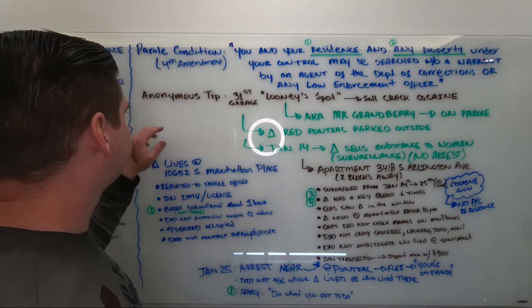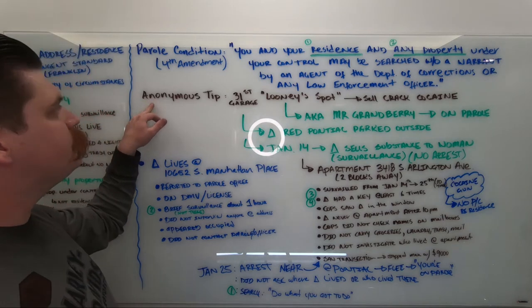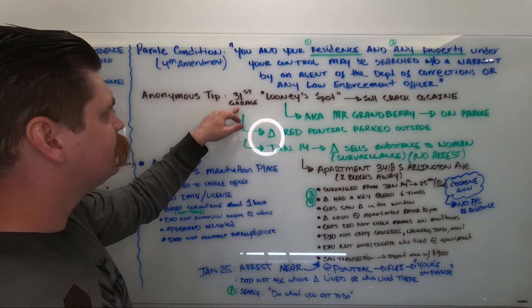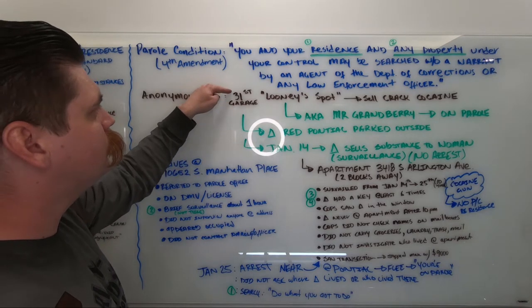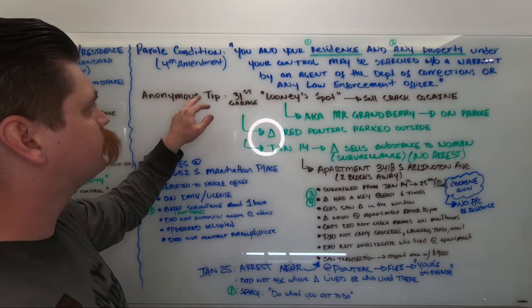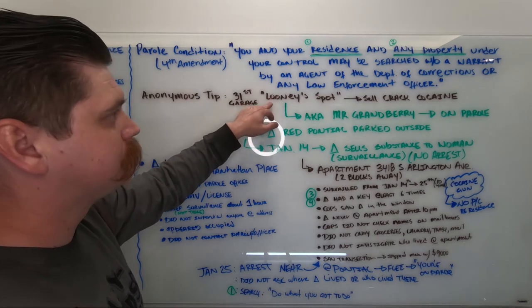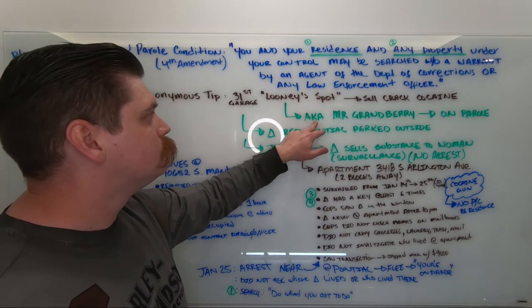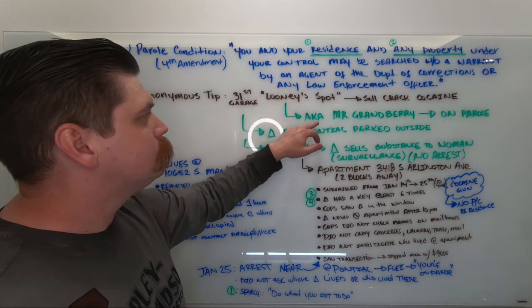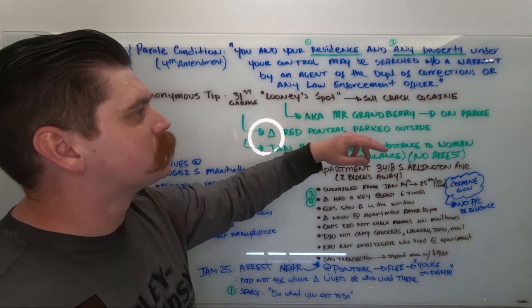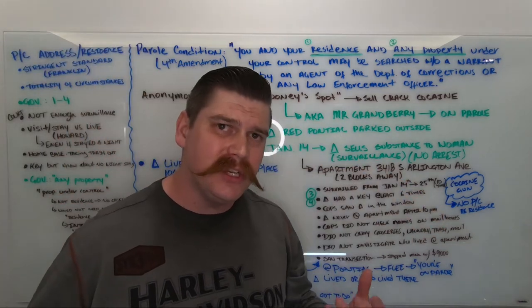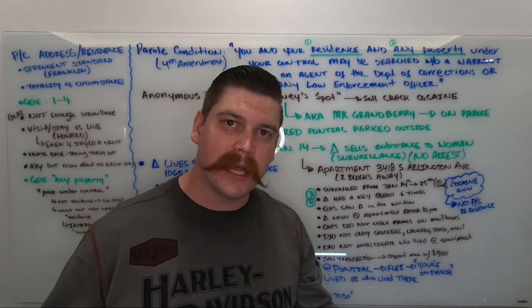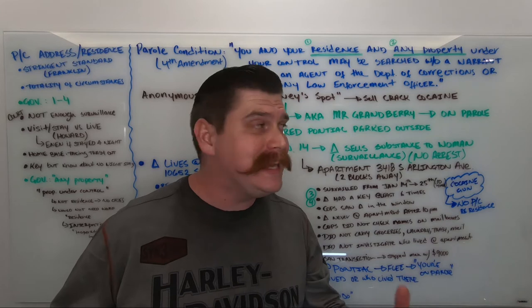So let's talk about the case. The officers receive an anonymous tip that a garage outside and in the back side of the 31st Street, and the tipster referred to it as Looney's spot. Somebody was selling crack cocaine. The officers knew that Looney is also AKA for Mr. Granbury, who was on parole. Chances are they knew that information from the previous case, because after all, Mr. Granbury is on parole, meaning that he's a felon.